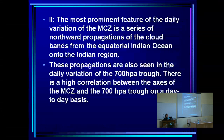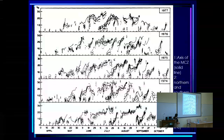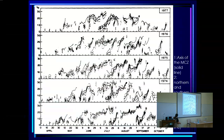There are two favorable locations, and this seasonal migration of the ITCZ gives us the monsoon. The most prominent feature of the daily variation of the MCZ is a series of northward propagations. This is the original figure from the Sikka and Gadgil paper, showing 90 degrees East over five years: 1973, 1974, 1975, 1976, 1977. Despite the complexity of the data, you can very clearly see these propagations occurring year after year.